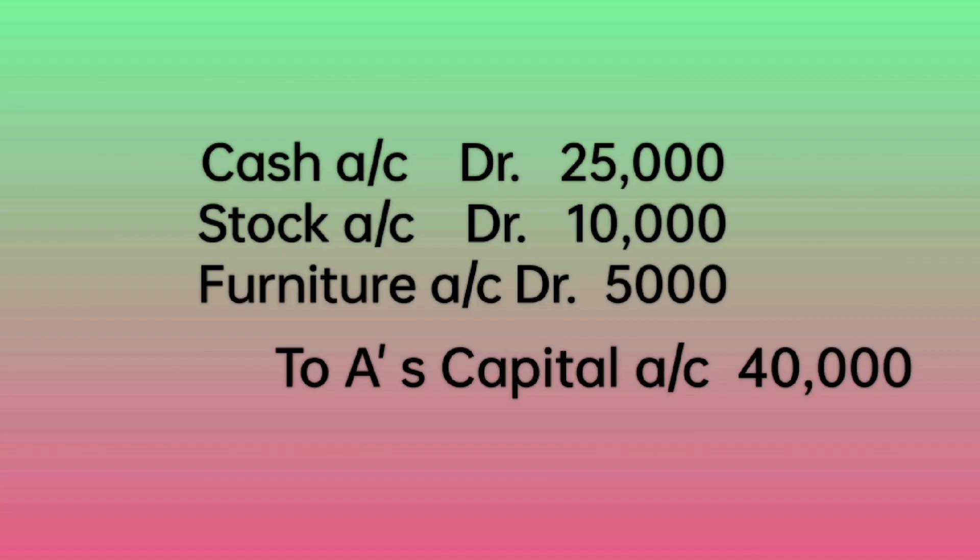That is: Cash account debit 25,000; Stock account debit 10,000; Furniture account debit 5,000; to A's capital account 40,000. Here the transaction affects four accounts — this is a compound journal entry.